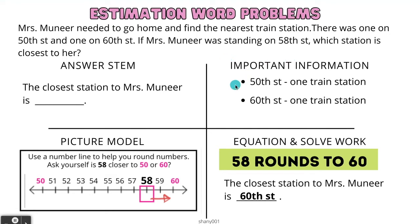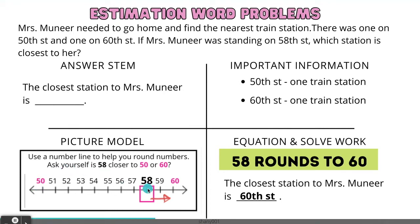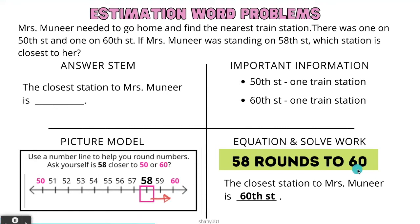We know that one train station is at 50th Street and one train station is at 60th Street. I will be using an open number line to solve this problem. If Mrs. Muneer is on 58th Street, I know that 58 is between the numbers 50 and 60. Drawing the number line from 50 to 60, we can see that 58 is closer to 60th Street. 58 rounds to 60. Our answer is: the closest station to Mrs. Muneer is 60th Street.